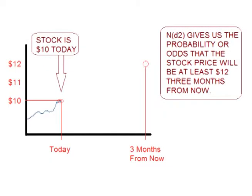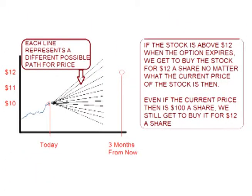For example, let's say a stock is currently $10 today, and we buy a $12 call option that expires in three months. ND2 tells us, using simple probability, if the strike price will be at or above $12 when the option expires — in other words, the probability or odds of whether or not the option will be exercised. Let's say the stock is at or above $12 in three months. The option is exercised, and we get to buy that stock for $12 — even if the stock is $13, $14, $20, or $100, we still get to exercise the option and buy the stock for only $12. We get to buy the stock for $12, but the price or value of the stock at that time will either be $12 or more than $12.